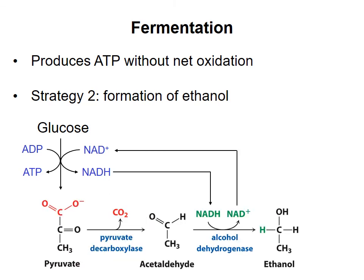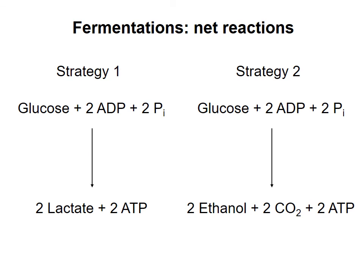A second strategy used by some microorganisms is to convert glucose to pyruvate, and then convert the pyruvate to carbon dioxide and acetaldehyde. The acetaldehyde is reduced to ethanol, consuming NADH made earlier in the process. Again, ATP is produced without changing the net oxidation state on carbon. Note that fermentation refers to the entire process of converting glucose to lactate, or glucose to ethanol and carbon dioxide — not just the final steps in these processes.